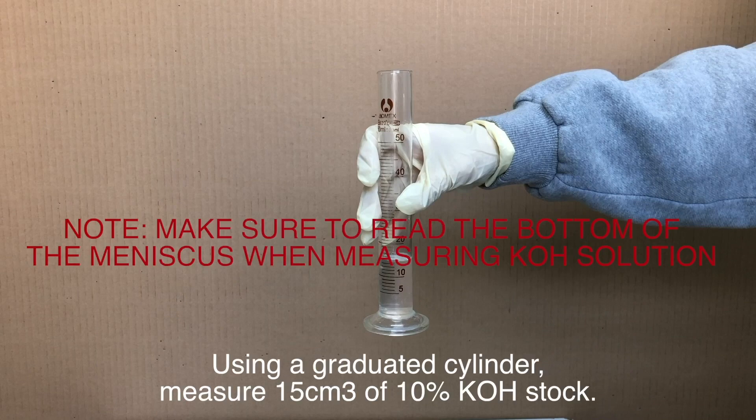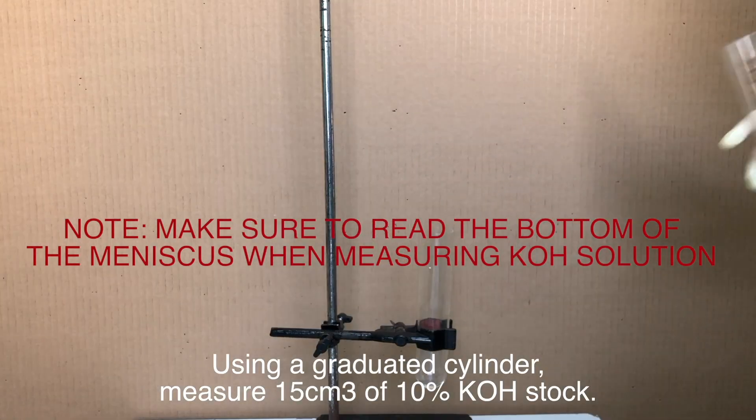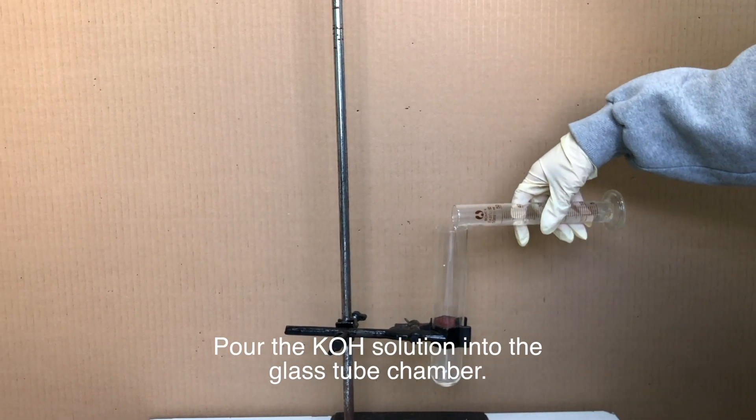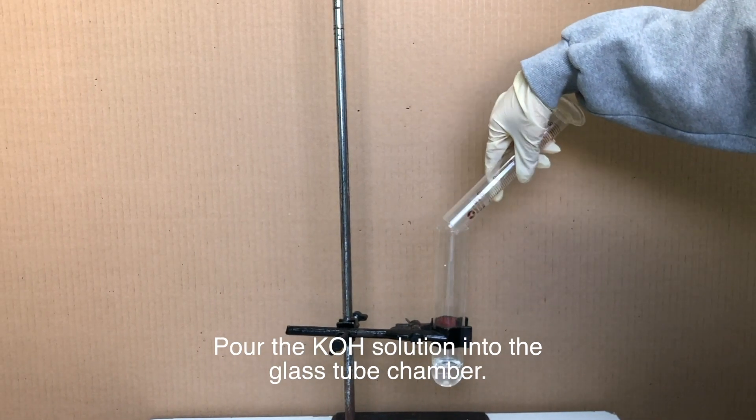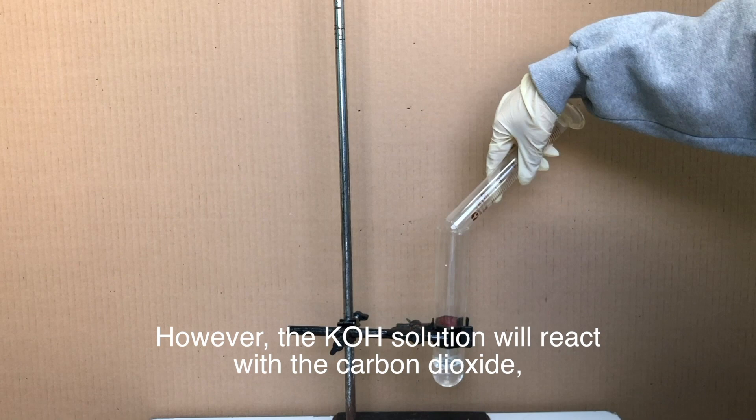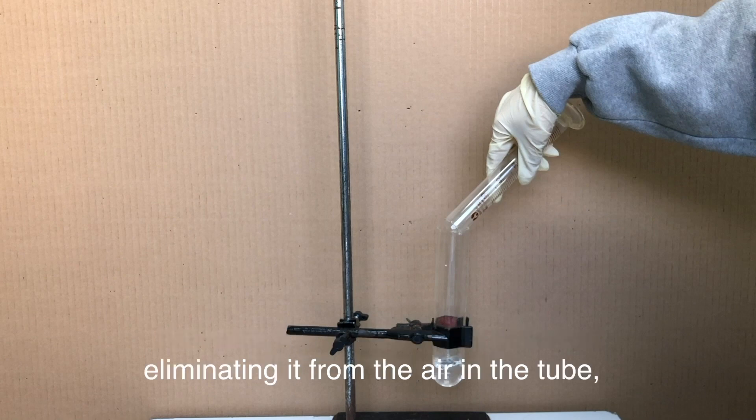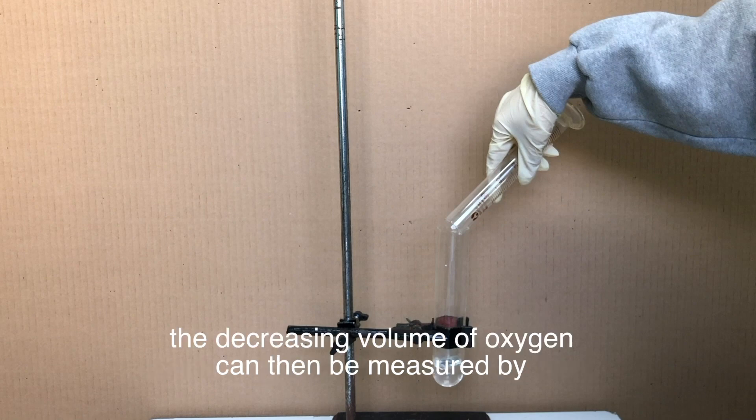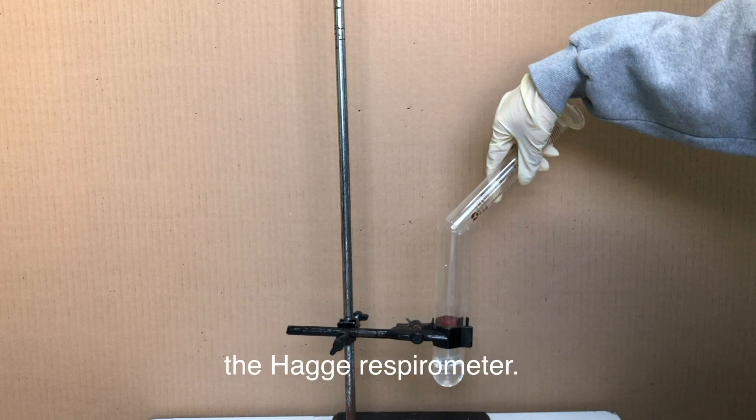Using a graduated cylinder, measure 15 centimeters cubed of 10% KOH stock. Pour the KOH solution into the glass tube chamber. As beans respire, they take in oxygen from the environment and release carbon dioxide. However, the KOH solution will react with the carbon dioxide, eliminating it from the air in the tube. The decreasing volume of oxygen can then be measured by the Hagi respirometer.